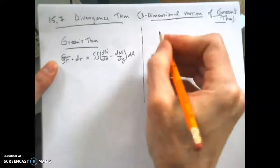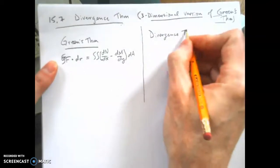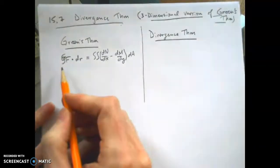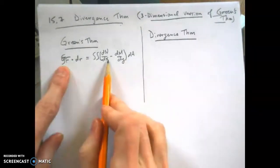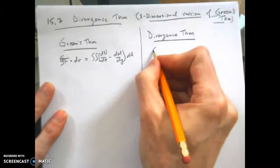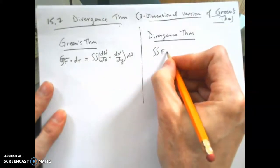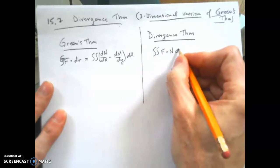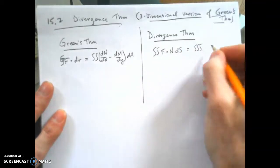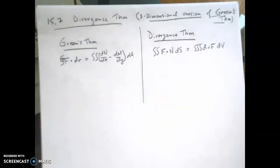Now, over here, we're going to do the Divergence Theorem. The Divergence Theorem is, so this is in two dimensions, this is now going to be in three dimensions. So we're doing a double integral of F dotted with N over some surface is equal to a triple integral of the divergence of F over a volume.